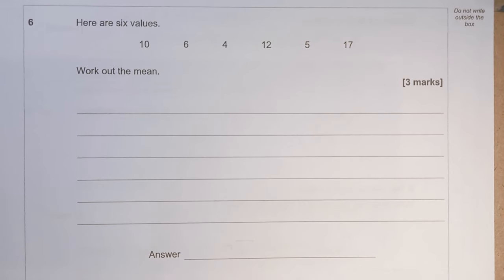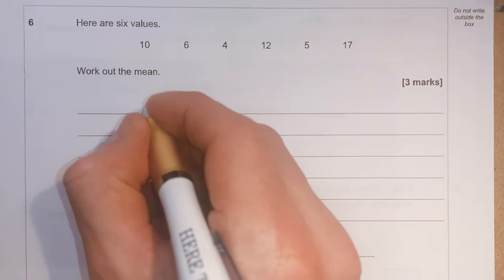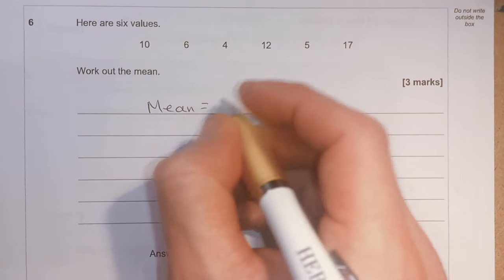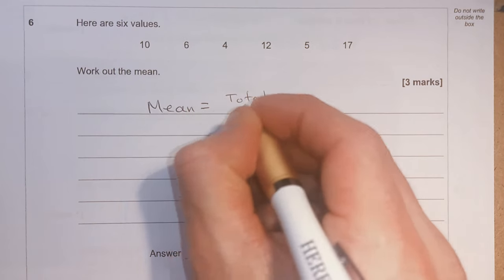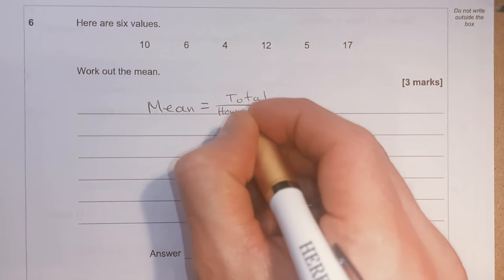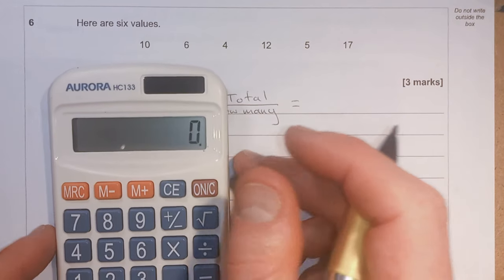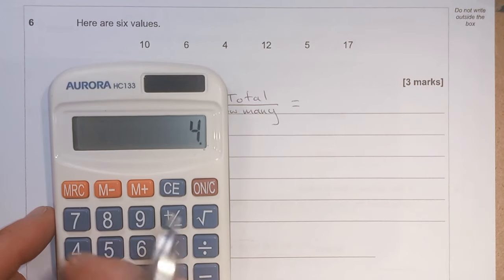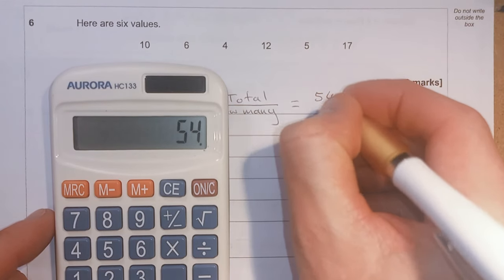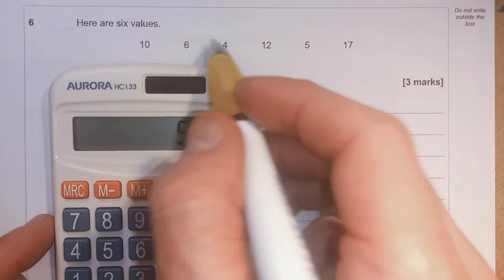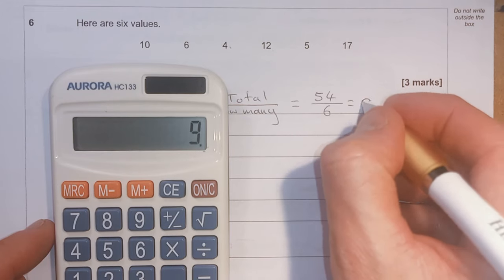Question 6: Work out the mean of six values: 10, 6, 4, 12, 5, 17. The mean is the total divided by how many there are. Total: 10 + 6 + 4 + 12 + 5 + 17 = 54. Divided by 6 gives us 9.